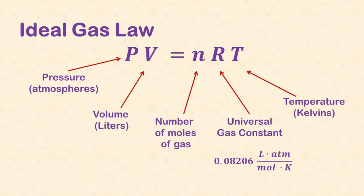The ideal gas law, PV equals NRT, shows relationships among pressure, volume, number of moles of gas, and the temperature.